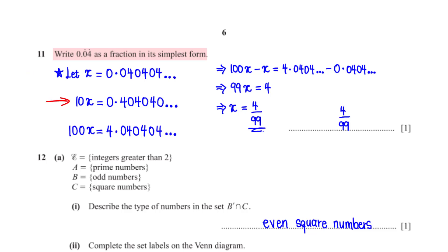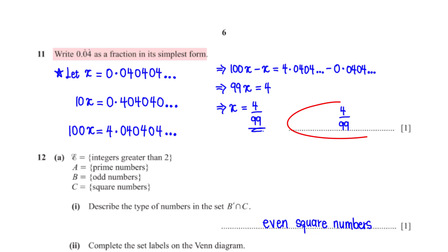Write 0.04 recurring as a fraction in its simplest form. Let x equal 0.040404... Multiplying x by 100 gives 4.0404... Since 100x and x have the same repeating pattern after the decimal point, 100x minus x gives 99x equals 4, so x equals 4 over 99.